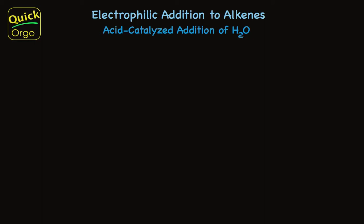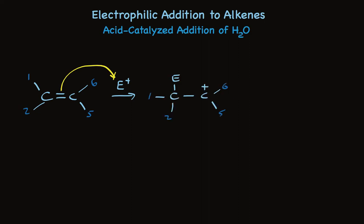The acid-catalyzed addition of water to an alkene follows the typical electrophilic addition mechanism. This is a two-step process where the double bond first reacts with an electrophile. The pi electrons are used to form a sigma bond, while the pi bond breaks to form a carbocation. That carbocation intermediate is really reactive. The carbon needs a pair of electrons, so it reacts with a nucleophile to form a second sigma bond.